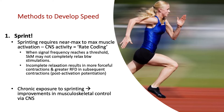A prime example of post-activation potentiation is when you have just lifted heavy weights in the gym and then go out and run up a flight of stairs — it seems like you are floating up those stairs. This is because there is not complete rest between subsequent contractions, so you have summation happening in the nerve impulse. With chronic exposure to sprinting, you see huge improvements in musculoskeletal control via the central nervous system — neural adaptations including improved nerve transmission, summation ability, and post-activation potentiation.